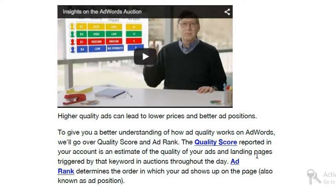Ad rank determines the order in which your ad shows up on the page, also known as the ad position. On a Google search results page, we have four advertisements on the top, four on the bottom, and in between around ten organic results. If your quality score is good, your rank is good, and you will appear above your competitor organically. And if you are advertising as well, if your quality score is good, you have to pay less to appear in the first position.